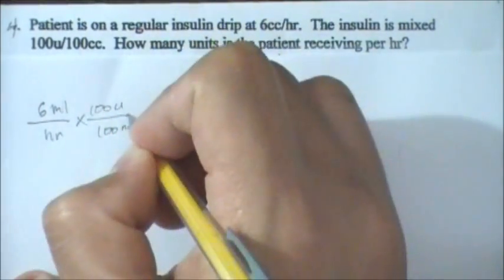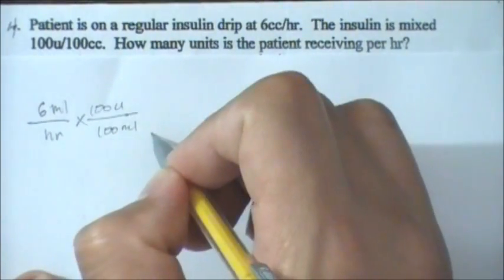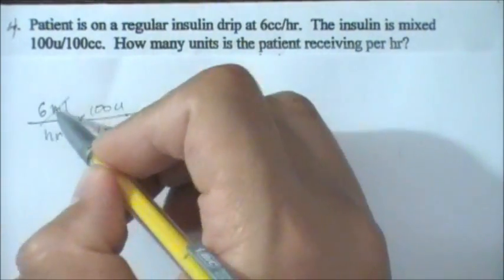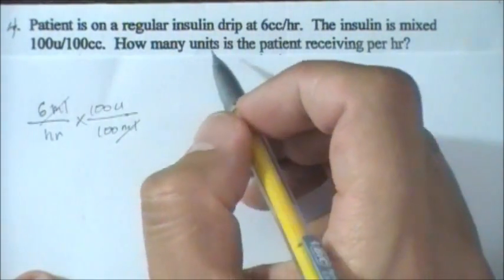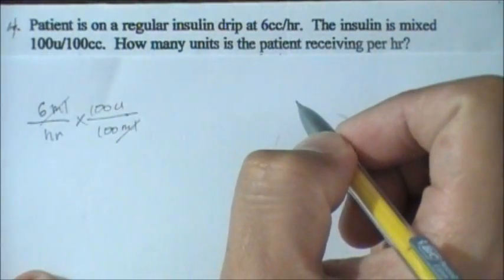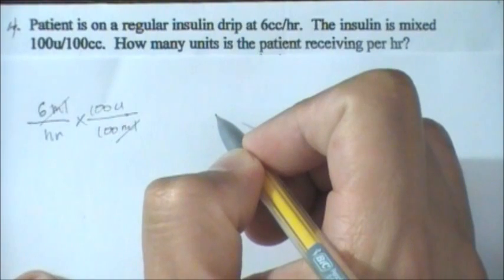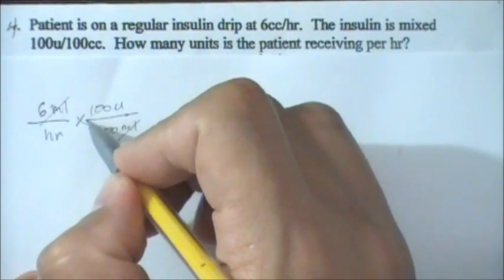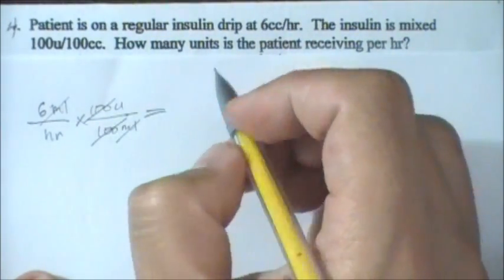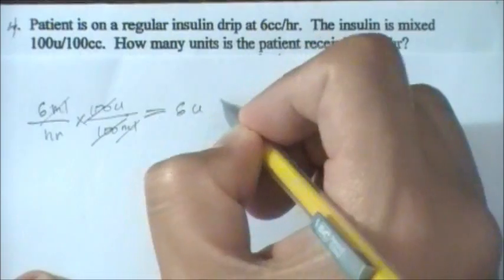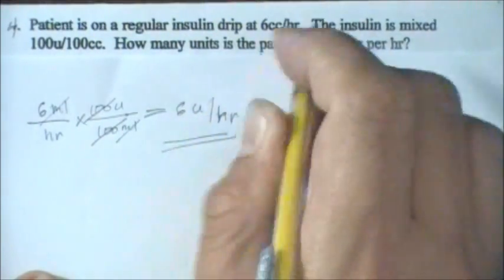You place 100 ml in the denominator so that you can cancel the ml from the order. When you cancel the ml and the 100s, what you have left is 6 units per hour. That's it — easy.